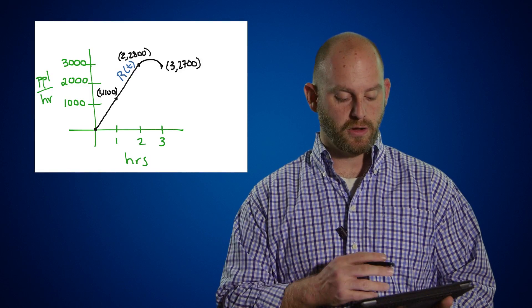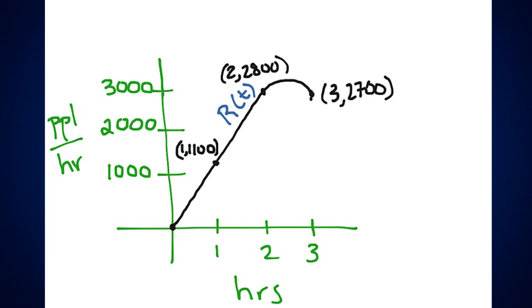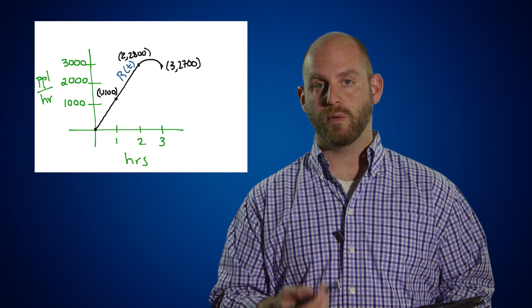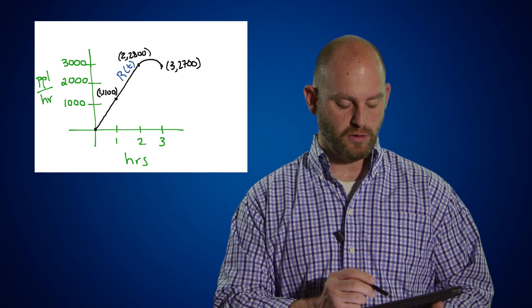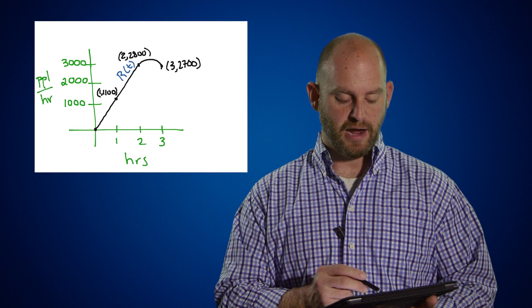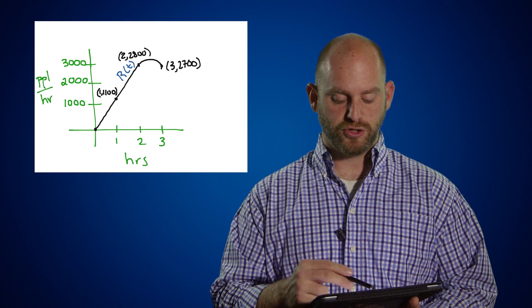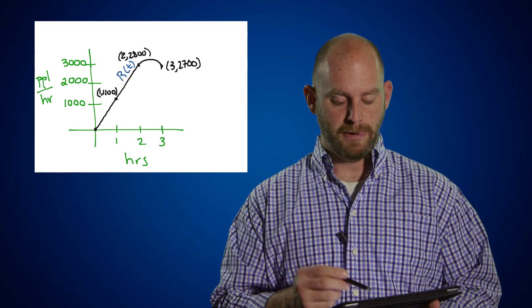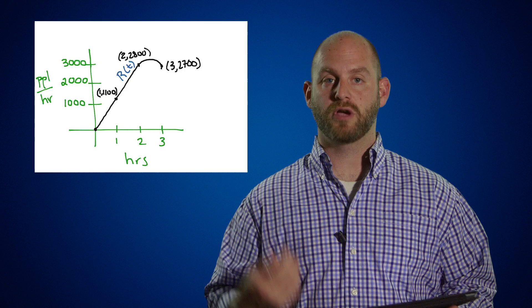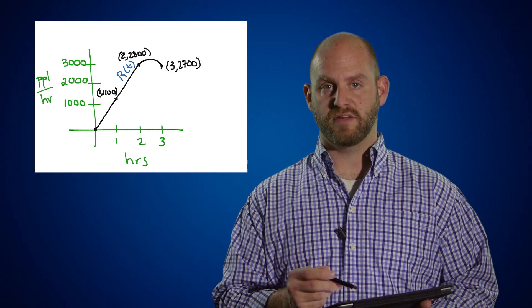Let's take a look at what this would mean graphically. I've made a graph of our R of t function and plotted four values at 5 p.m., 6 p.m., 7 p.m., and 8 p.m. — hours zero, one, two, and three. At hour zero there was no one in the hall, so the ordered pair is (0, 0). At one hour, there were 1,100 people per hour entering. At hour two, 2,800 people per hour. And at hour three, the rate was 2,700 people per hour, and we're ready to begin the show.